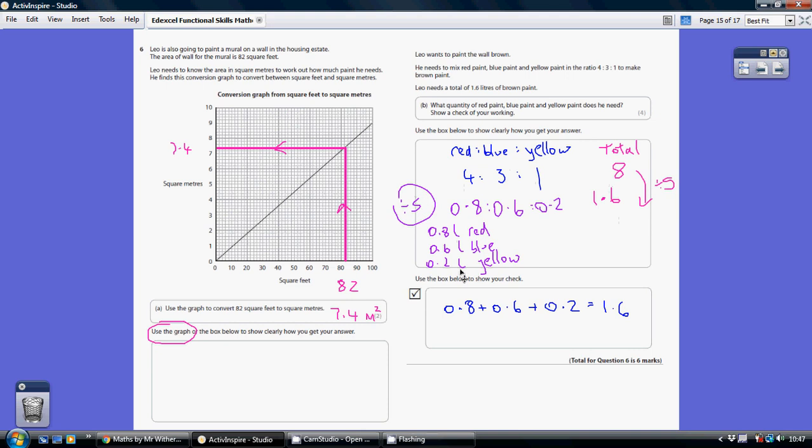Now for my check here, what I've done is that my amount of red, blue and yellow paint added together gives me 1.6, which is the amount of brown paint I need. It doesn't actually necessarily prove you've got it right, but what it does prove is if that does not add up to 1.6, then you've definitely got it wrong. So it's a pretty good check.